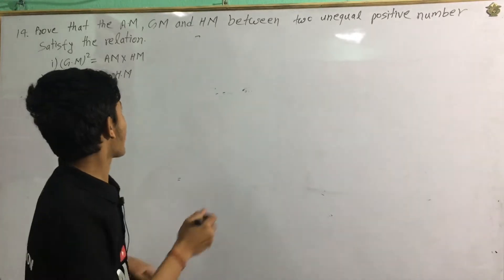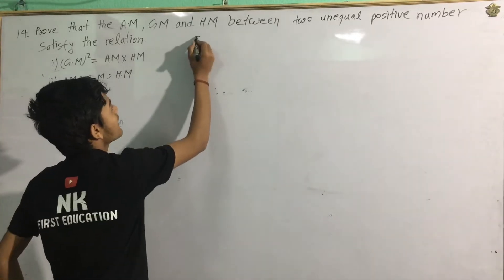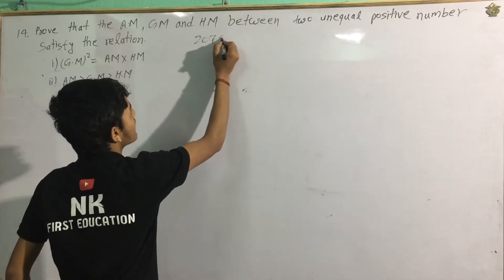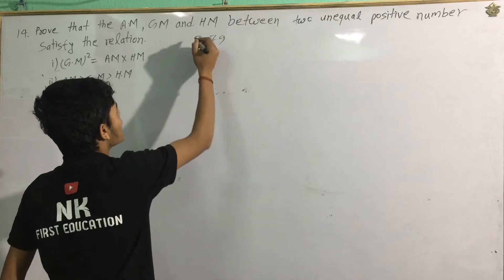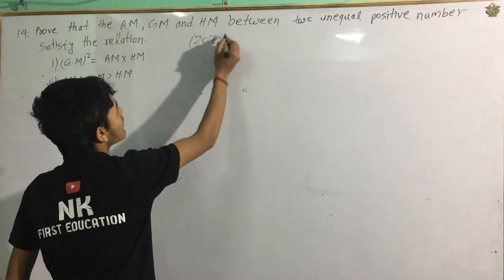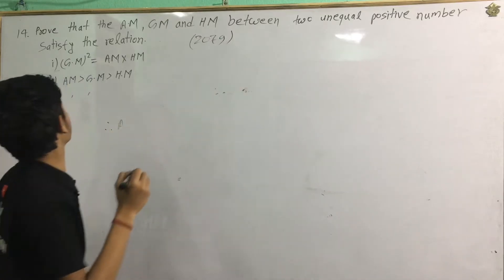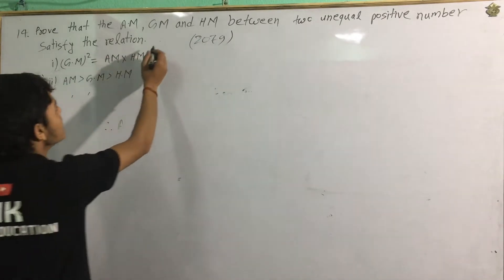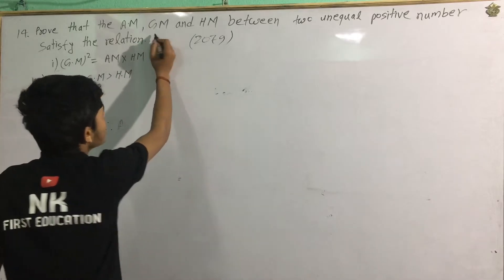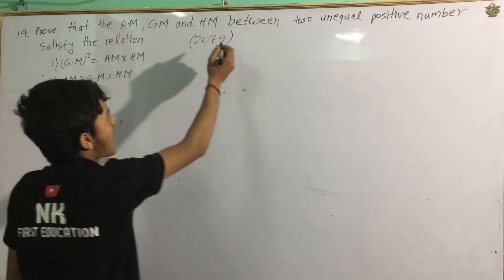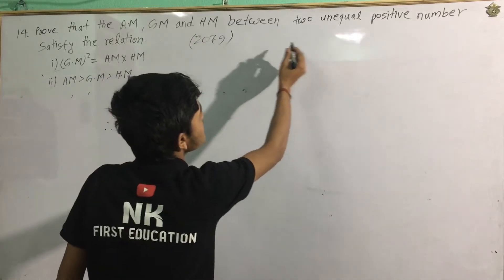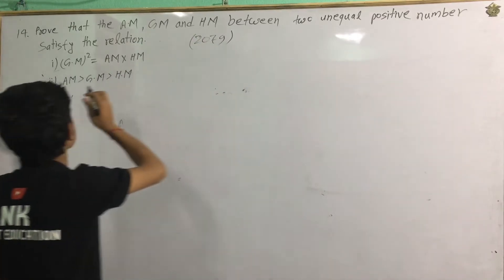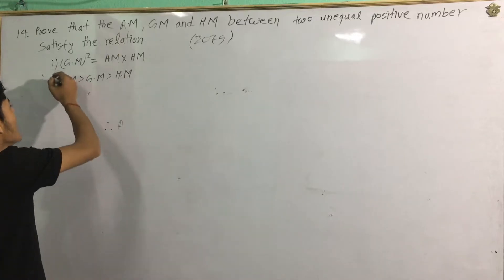Hello. Today I am going to show you the first math problem from 2009. May I show you the question: Prove that the arithmetic mean, geometric mean, and harmonic mean between two unequal positive numbers satisfy the relation.